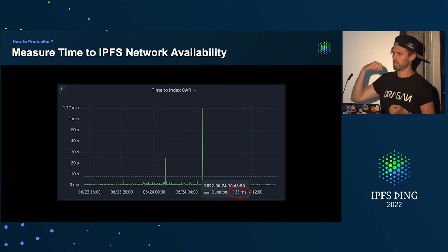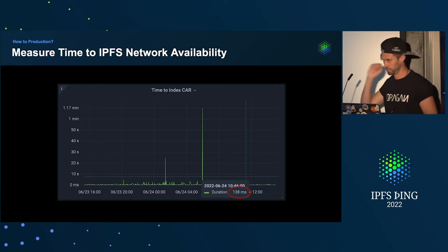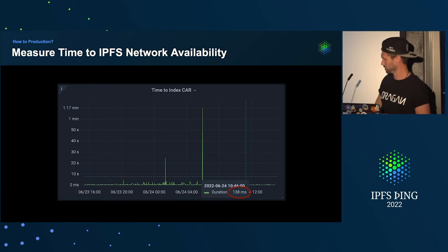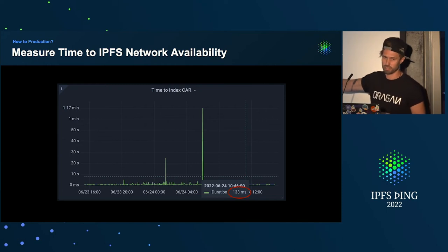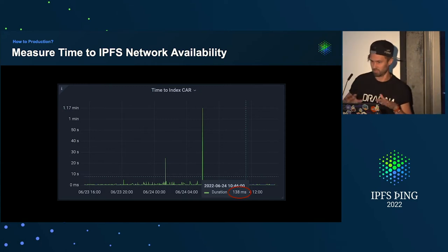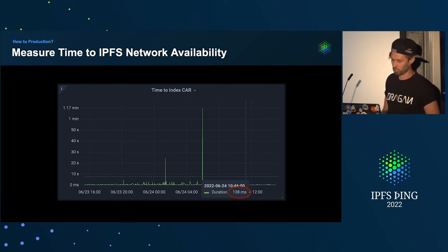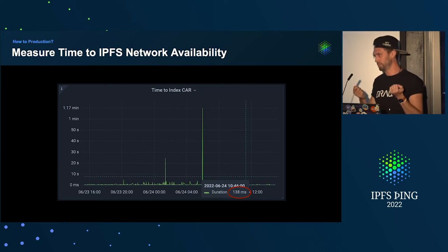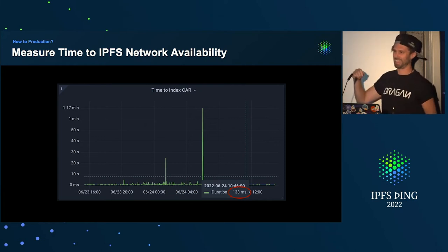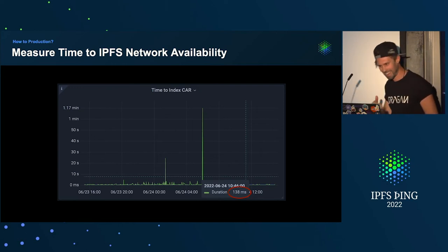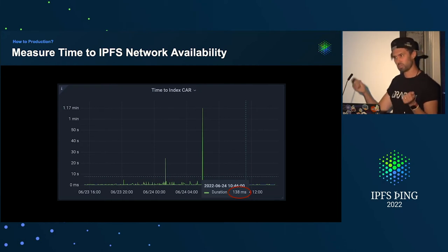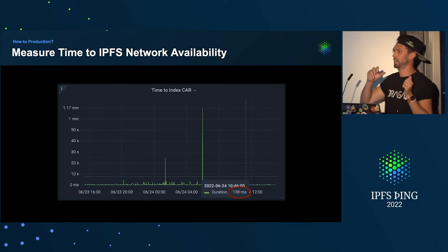We did some recent changes to DynamoDB where we now bulk write, which basically halved the indexing time. This means that CAR files that get uploaded are available on the gateways in less than a second, depending on the size and number of blocks. For example, you can have a relatively small 30 MB CAR file but with 10,000 blocks in it — NFT drops often have 10k images plus individual metadata JSON files for each. Previously we were writing every single block to DynamoDB separately; now we write them all at once.